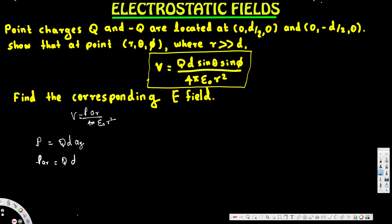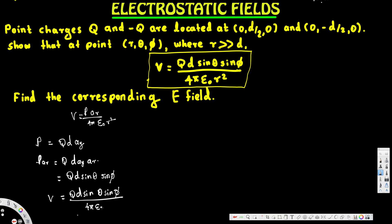Since the dipole moment is ρ = qd·a_y, the dot product ρ·a_r becomes qd·a_y·a_r, which we can write as qd·sinθ·sinφ. Therefore we can replace the numerator to get V = qd·sinθ·sinφ divided by 4πε₀r². That's exactly what we wanted to prove — the first part is done.